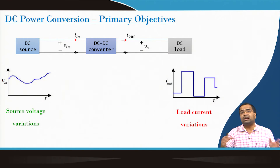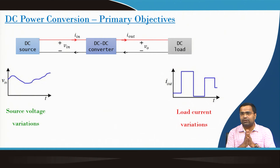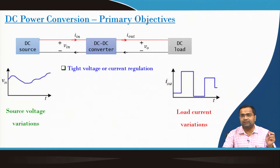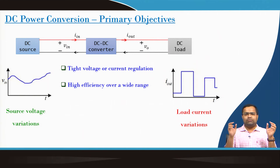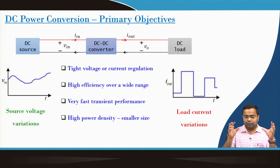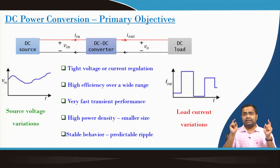The source voltage can vary, the load current can vary, and some load currents can vary in step transients. Sometimes the load voltage can also vary, particularly for dynamic voltage scaling applications. The primary objective of the DC-DC converter is to achieve tight voltage regulation. In some cases, we need high current regulation — for example, constant current battery charging or LED driving. We also want to achieve high efficiency over a wide range of load current and input voltage, very fast transient performance, reduced converter size, high power density, and stable periodic behavior so that the ripple can be predicted.